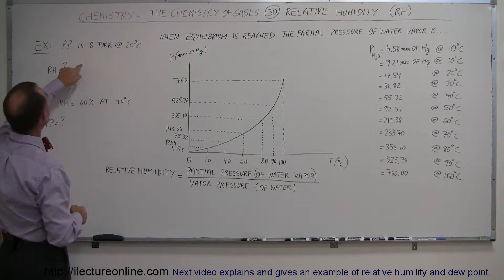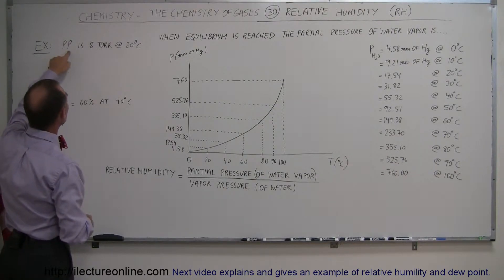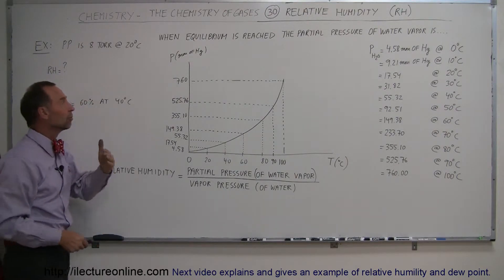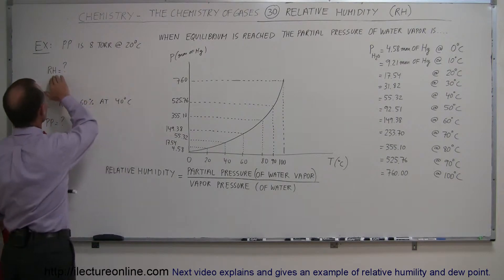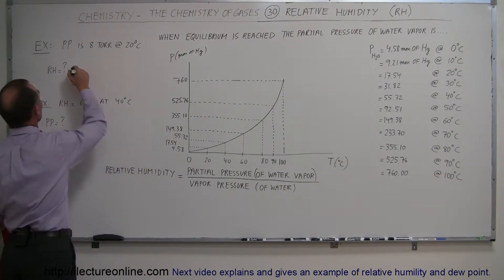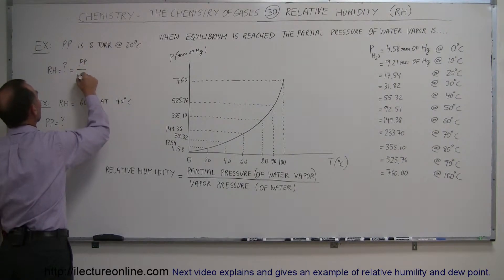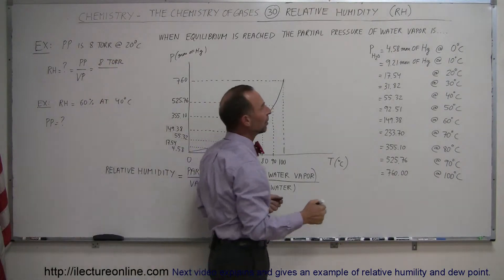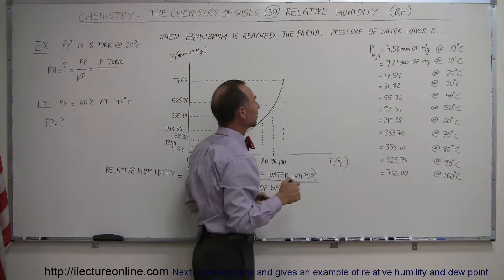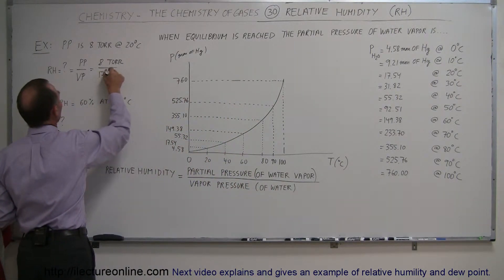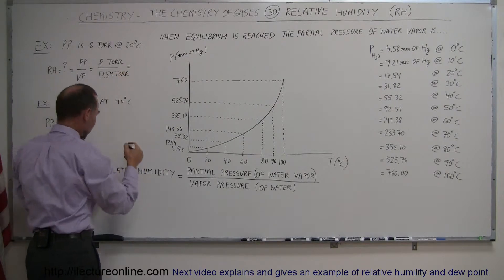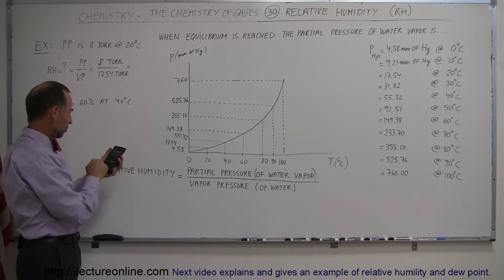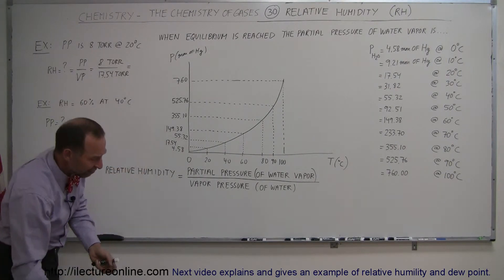Here's a numeric example. Let's say you measure the partial pressure — PP for partial pressure — of the water vapor and it is 8 torr (millimeters of mercury) at 20 degrees centigrade. What is the relative humidity? The relative humidity equals the ratio of the partial pressure divided by the vapor pressure. That's 8 torr for the partial pressure, and at 20 degrees centigrade the vapor pressure is 17.54 torr. So 8 divided by 17.54 equals 45.6%.